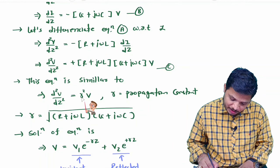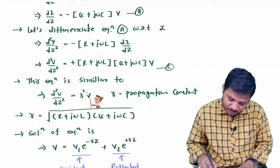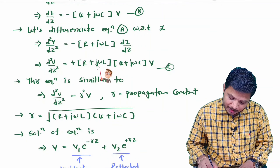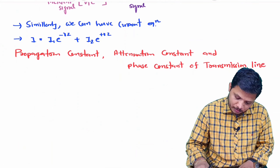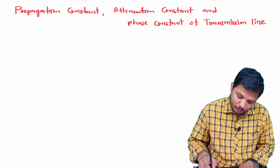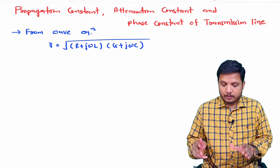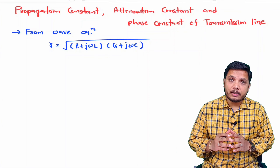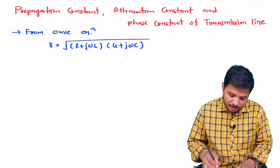In the previous video, the wave equation of transmission line was explained. Comparing that equation with the derived equation, we get gamma, which is the propagation constant. So gamma squared equals (R + jωL)(G + jωC), and gamma equals the square root of (R + jωL)(G + jωC). That is our propagation constant.